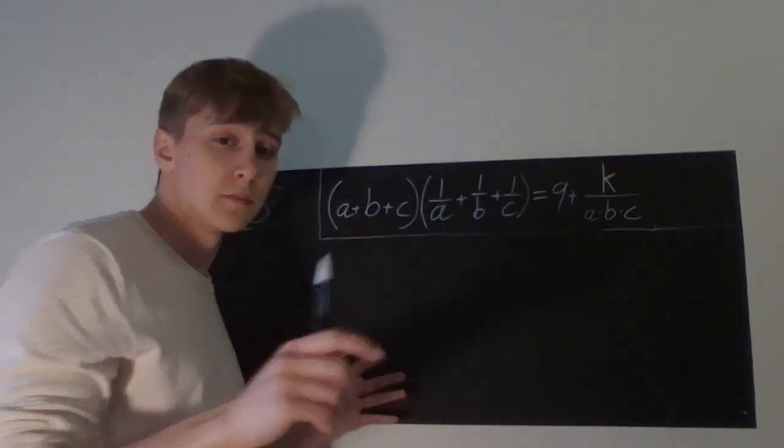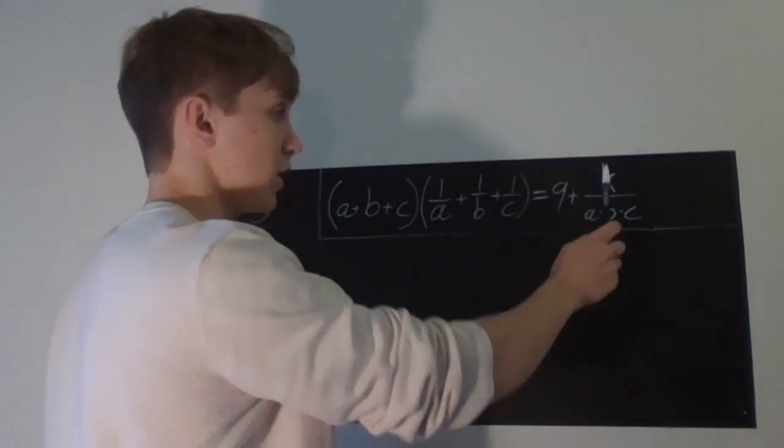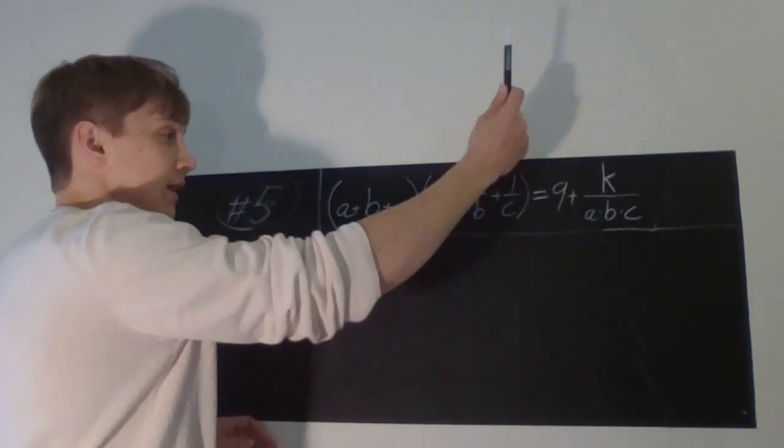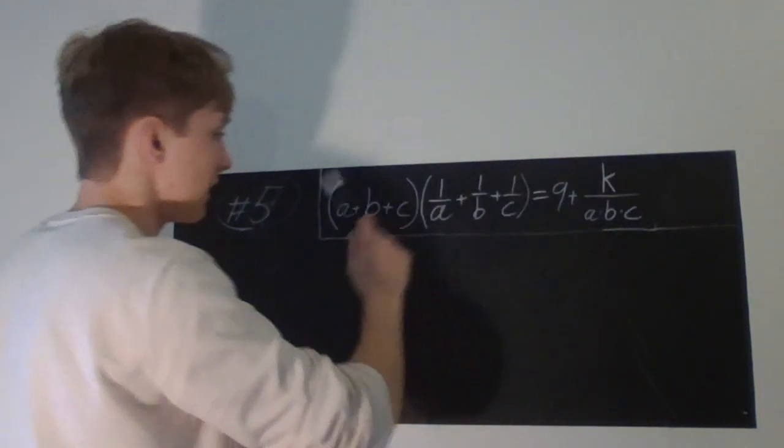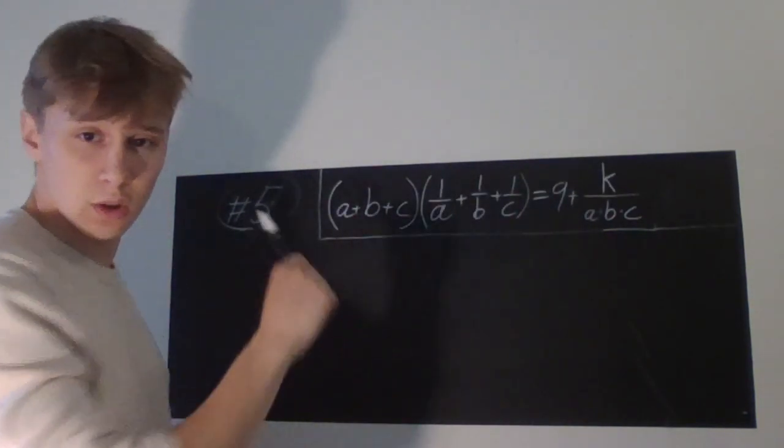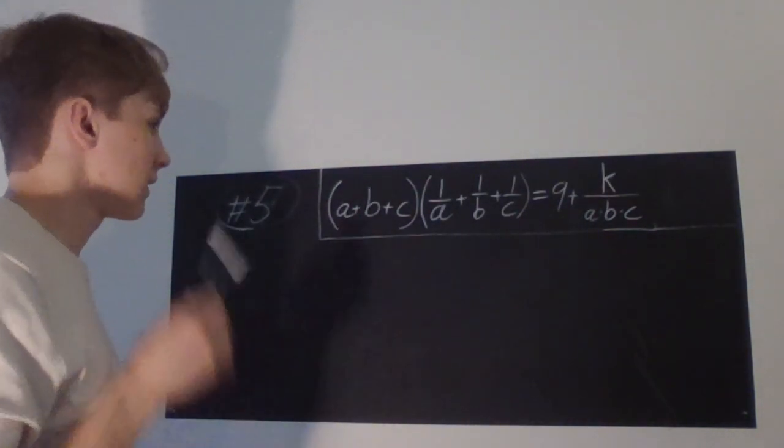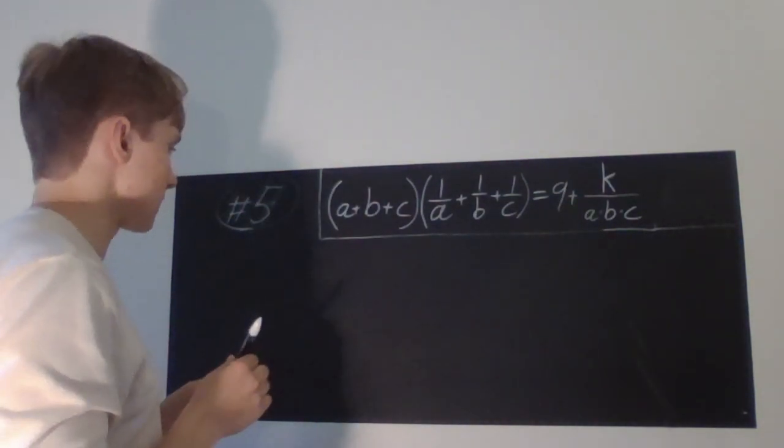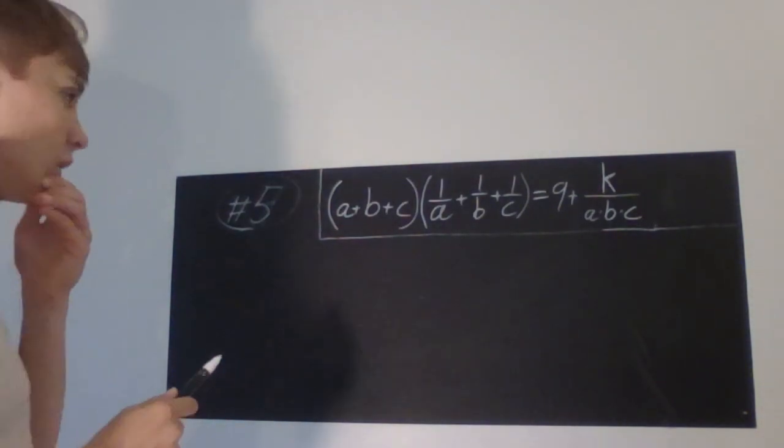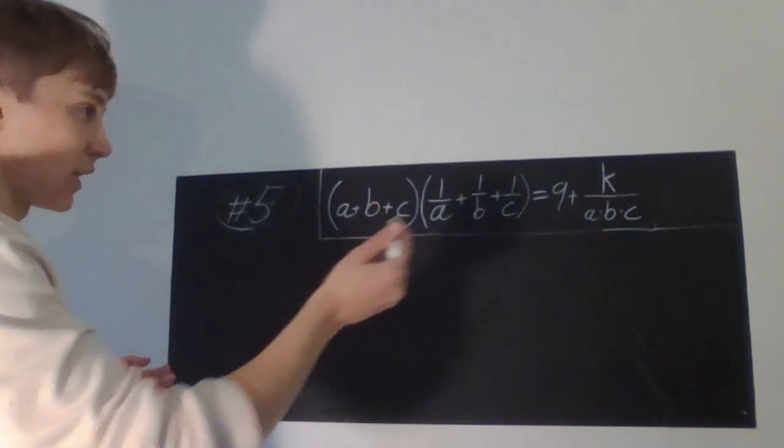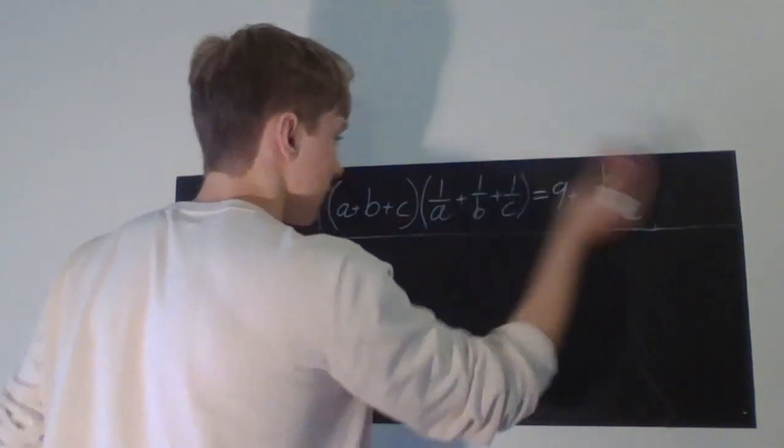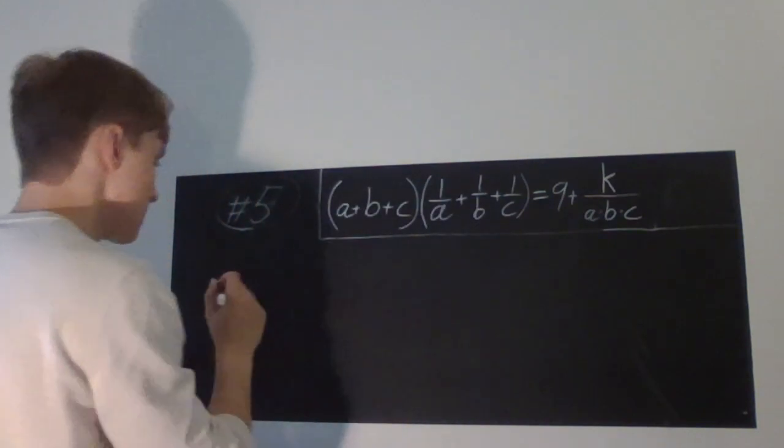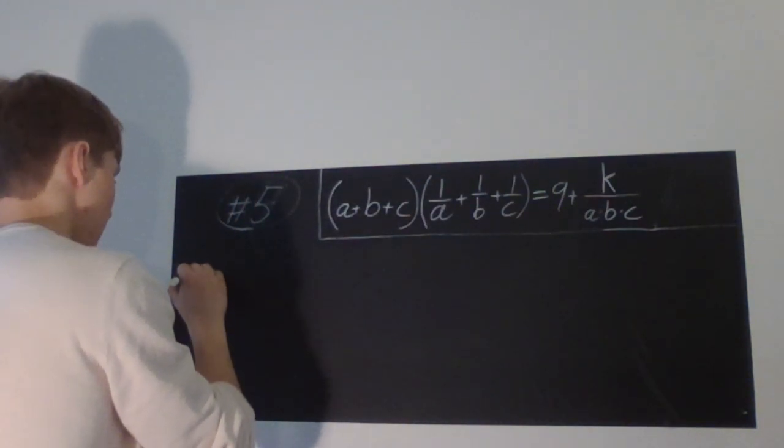So the question is, which possible integer k can you obtain from any integer a, b, and c such that this equation holds? So I'll just start by simplifying this.